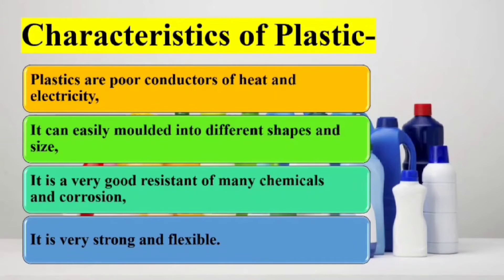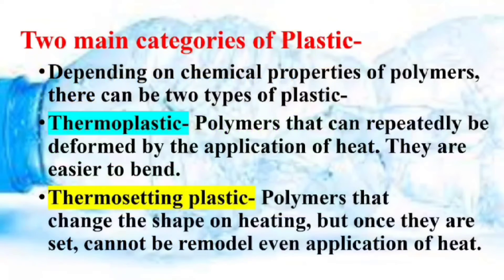Characteristics of plastic: Plastics are poor conductors of heat and electricity. They can easily be molded into different shapes and sizes. Plastic is a very good resistant to many chemicals and corrosion, and it is a very strong and flexible material. Depending on the chemical properties of polymers, there can be two different types of plastics: thermoplastics, where polymers can repeatedly be deformed by the application of heat and they are easier to bend; and thermosetting plastics, where polymers change their shape on heating but once they are set cannot be reshaped even after the application of heat.